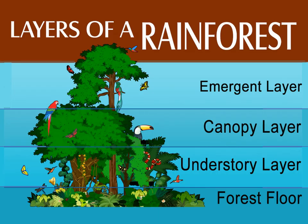The rainforest has four layers. The emergent layer is made up of the very tallest trees. In the next layer, the canopy, the leaves and the branches of the trees all touch one another or are connected by vines. Most animals in the rainforest live in the canopy.